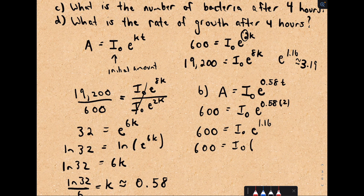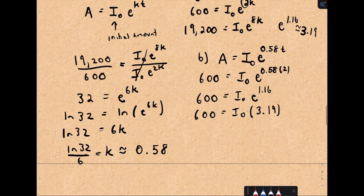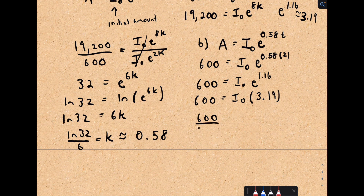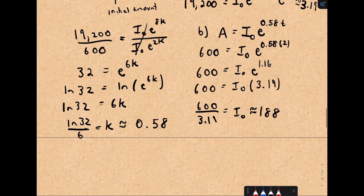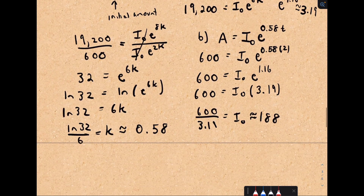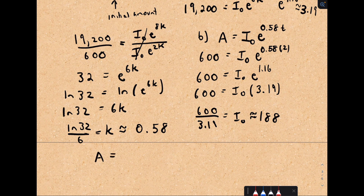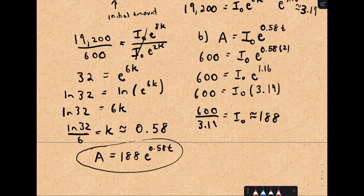So e^(1.16) is roughly equal to 3.19. Dividing both sides by 3.19, we get the initial amount: 600 ÷ 3.19 ≈ 188. So the initial amount was roughly 188 bacteria. Now we have our complete model: A = 188·e^(0.58t).